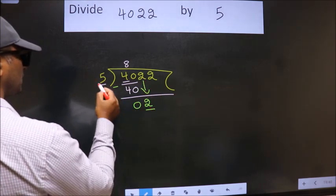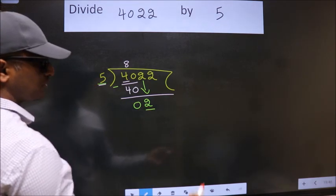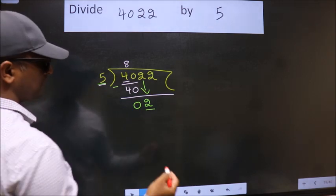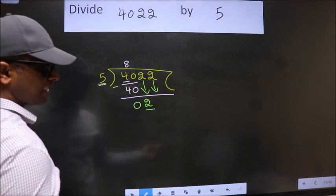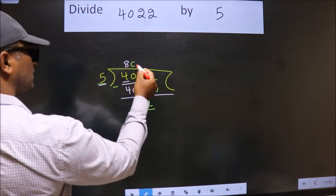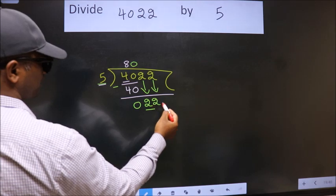here we have 2. Here 5. 2 is smaller than 5. So we should bring down the second number. And the rule to bring down second number is put 0 here. Then only we can bring this number down.